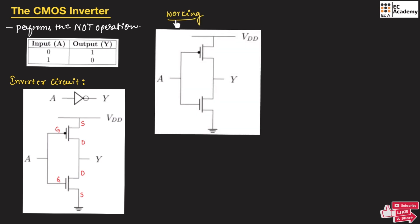Now let us understand the working of the CMOS inverter. When input A is equal to 0, the PMOS transistor will turn on and the NMOS transistor will turn off. Since the NMOS transistor is turned off, the voltage VDD will appear across the output Y. The VDD available across the source of PMOS will appear across the output Y, so output Y is equal to 1.